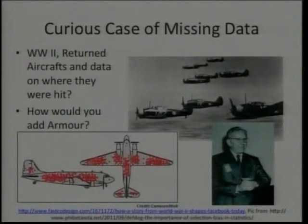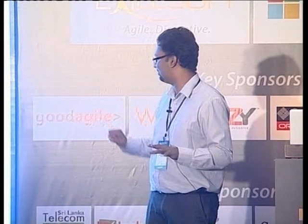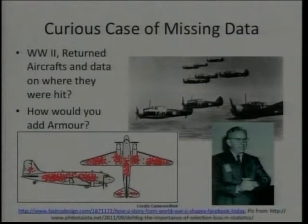They were going to put armor there — that's where the aircraft was being hit. Then there was a mathematician who came and said, 'I got it — what are you doing?' When they asked for an explanation, he said, 'That's a very important thing you have to understand about this data.'